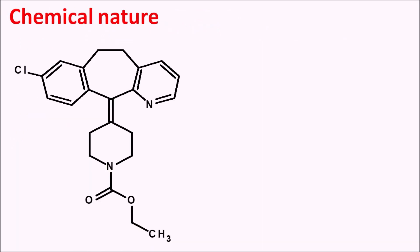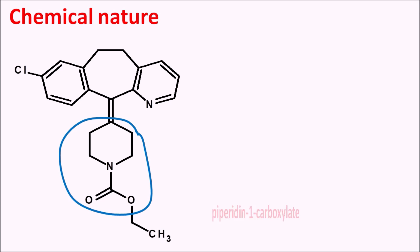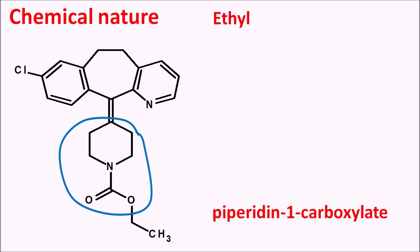Now let us see the chemical nature of this drug. In the structure of loratadine, we can identify a heterocyclic ring system attached with a carboxylate — specifically a piperidine-1-carboxylate forming an ester with an ethyl group. So loratadine is an ethyl piperidine-1-carboxylate derivative. When this ester functionality is removed, it is converted into desloratadine. The piperidine ring is attached to a tricyclic ring system at the fourth position via a double bond.